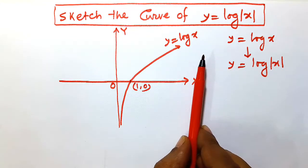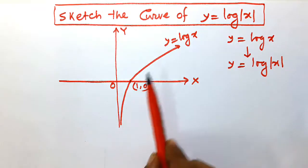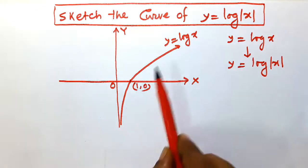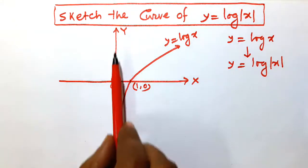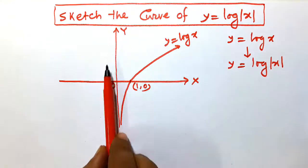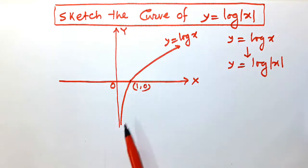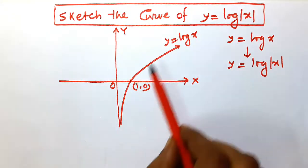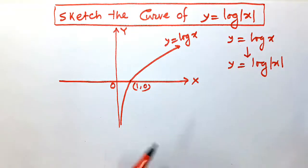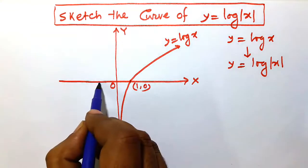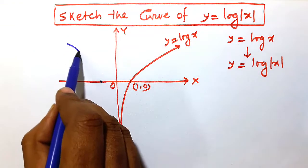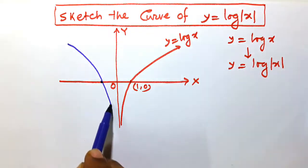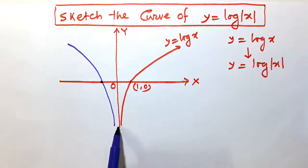Step two: take the image of the function y = log(x) in the y-axis as a plane mirror. Think of the y-axis as the mirror and draw the image of the object y = log(x). The image will pass through the point (-1, 0).